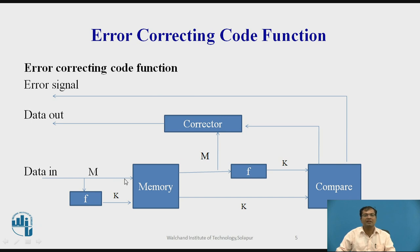Let us consider Error Correcting Code Function. Initially data in which is M is fed input to function F which gives K. M and K are stored in memory. M is picked which is passed to function F. K is generated. So comparison between these two K are carried out by comparator. If it mismatches then there is an error. Through this signal it is detected. If not, the data is passed through corrector and that will be the actual data.